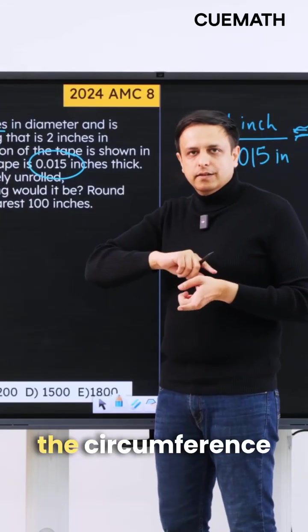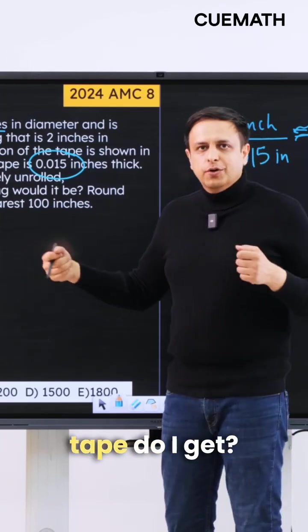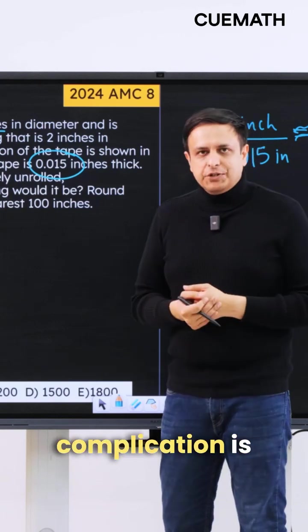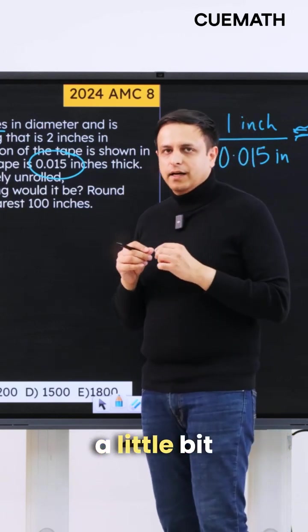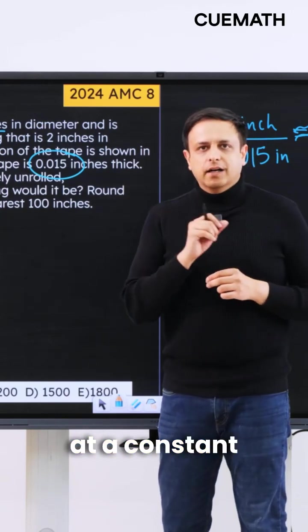Now what is the circumference of each unroll? So every time I do one unroll, how much tape do I get? Once again, the complication is that the radius decreases a little bit every time, but the beautiful thing is that the radius decreases at a constant rate.